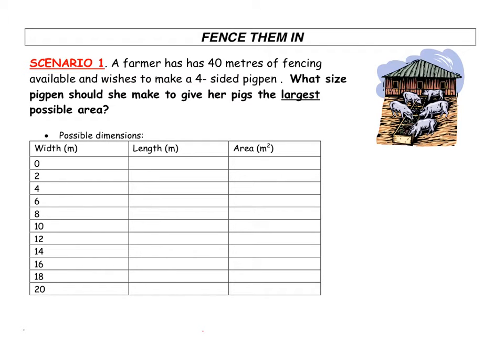Here's our first scenario. A farmer has 40 meters of fencing available and wishes to make a four-sided pig pen. What size pig pen should she make to give her pigs the largest possible area? We're looking for this optimal situation that gives the largest possible area.